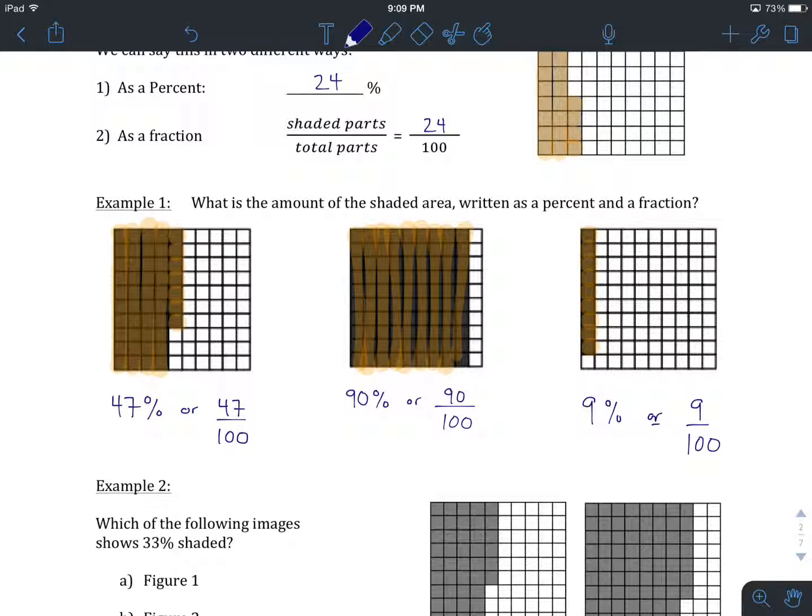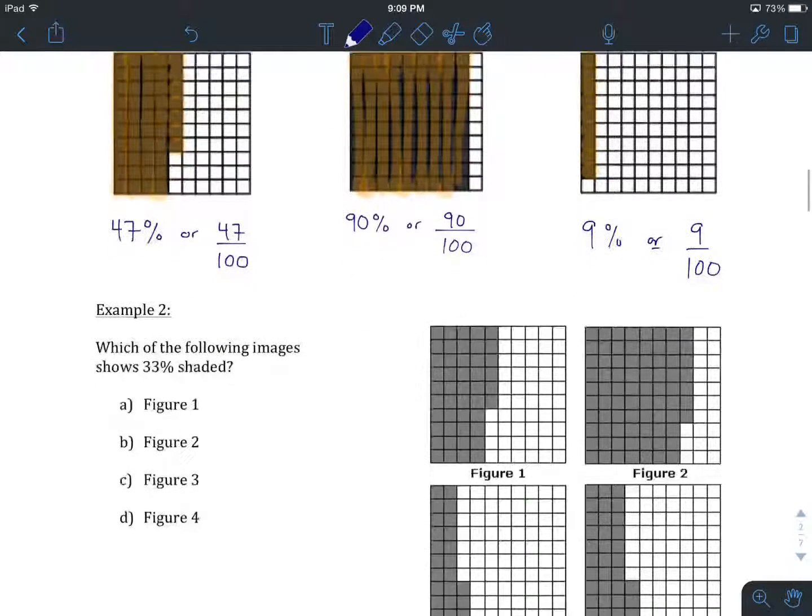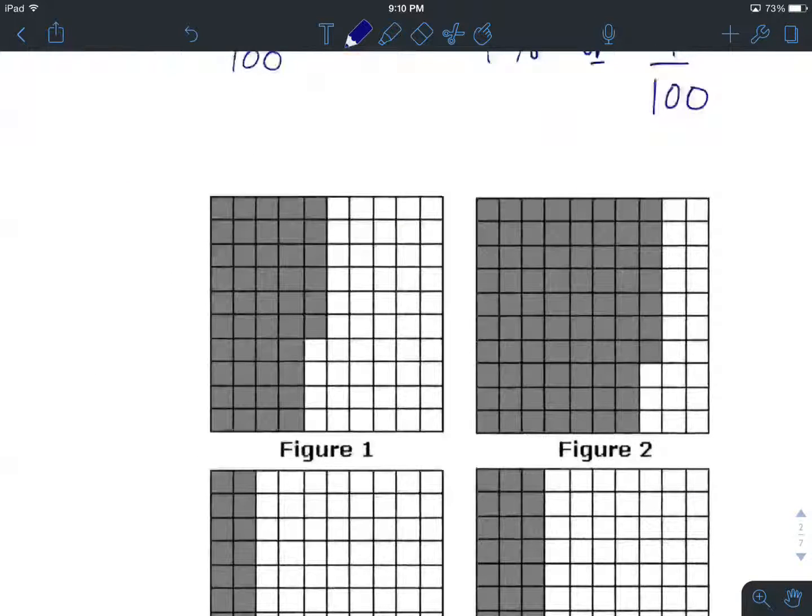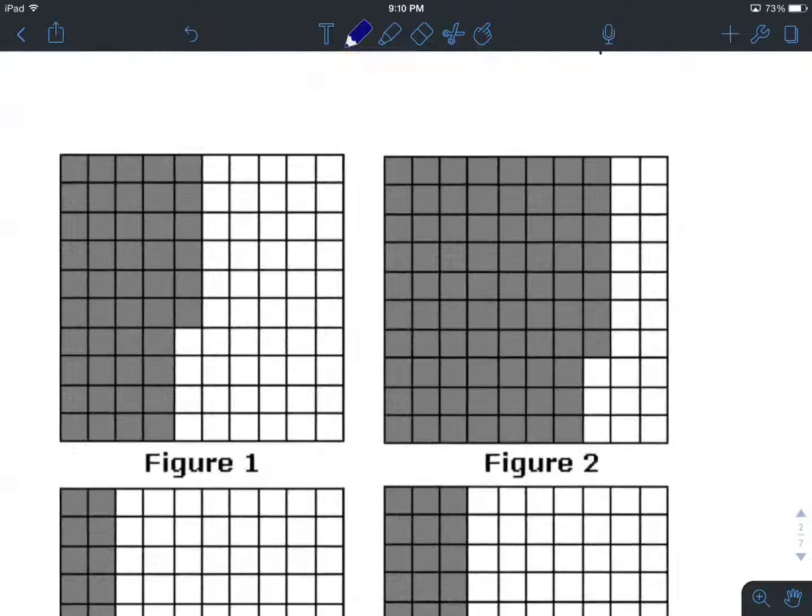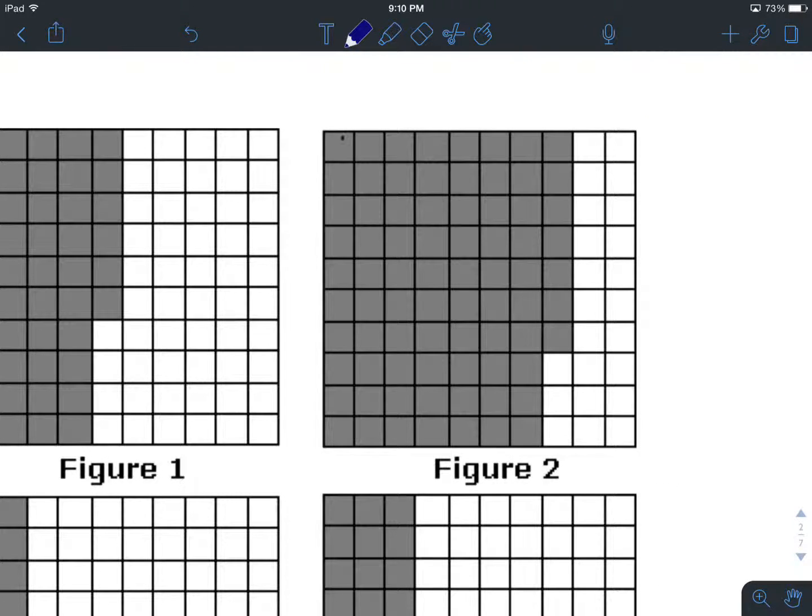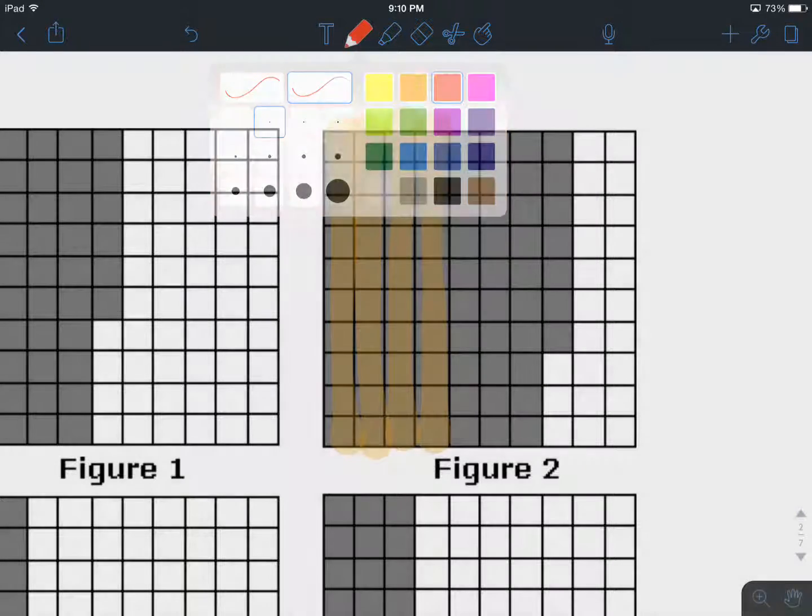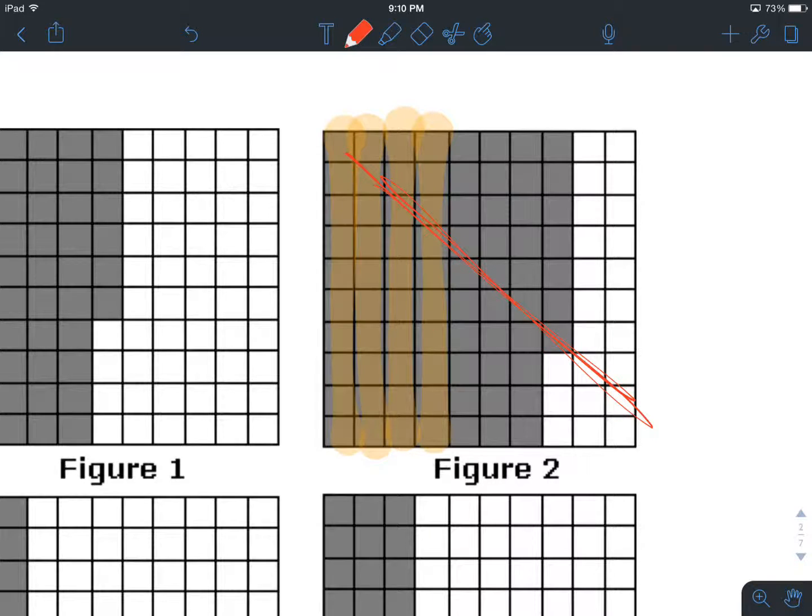Example number 2 shows us a multiple choice scenario where we get to do a little bit of problem solving and see if we can figure out which of these 4 squares is showing us 33% shaded in. 33% would be 3 rows and then 3 extra ones. There's a couple that we can knock off right off the bat. This one right here has way more than 33 shaded in. We've got 10, 20, 30, 40. That's way more than we are going to need for 33. So we can write this one off—not figure number 2.